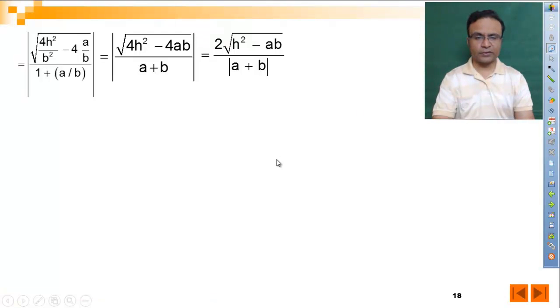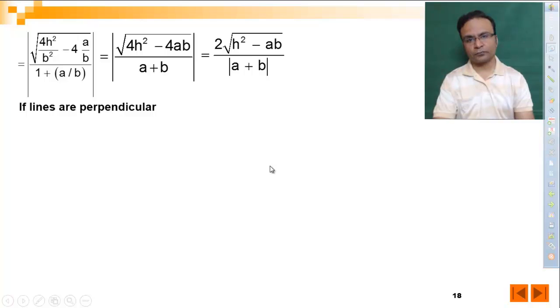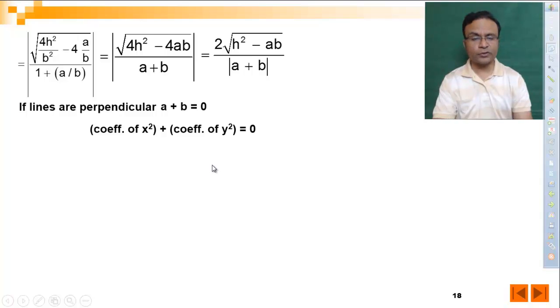For pair of straight lines, if straight lines are perpendicular, then theta is 90 degrees, tan 90 approaches infinity. In this ratio, what is zero? a plus b is zero. That means when lines are perpendicular, coefficient of x square and coefficient of y square, their sum is zero. This is a most important condition used in many questions.